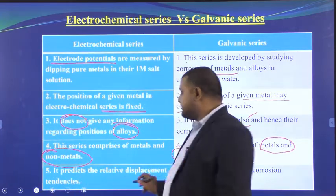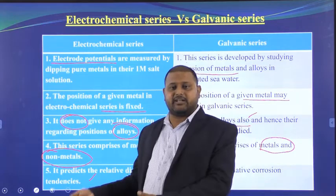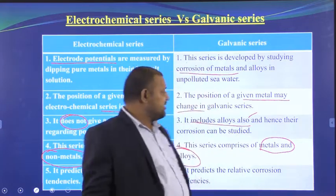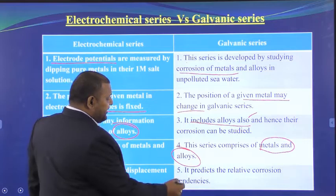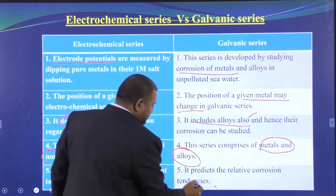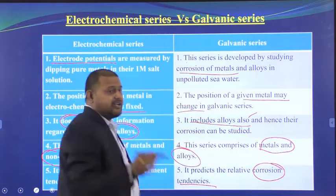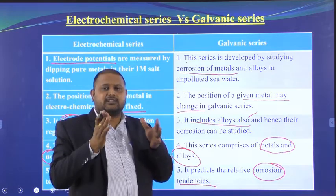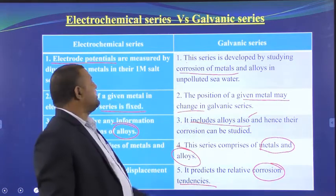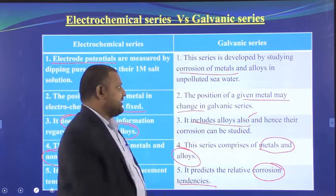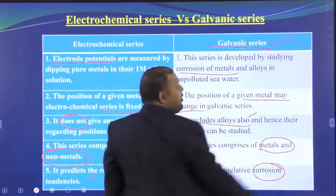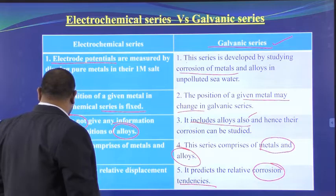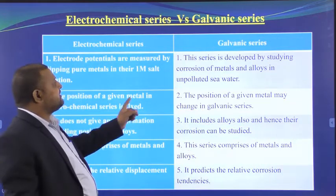The electrochemical series predicts the relative displacement tendencies — which metal displaces which. The galvanic series predicts relative corrosion tendencies — which metal acts as anode and will be corroded more. To understand corrosion, the galvanic series is obviously more useful than the electrochemical series.